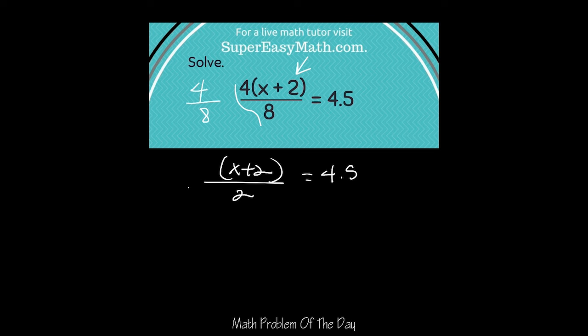Now we can solve using inverse operations. So I can see that the left side of the equal sign is being divided by 2. So I'm going to multiply the left side of the equal sign by 2. And I have to do the same on the other side too to keep this thing balanced. So I'm going to get rid of this. I'm left with x plus 2 and that equals 9.